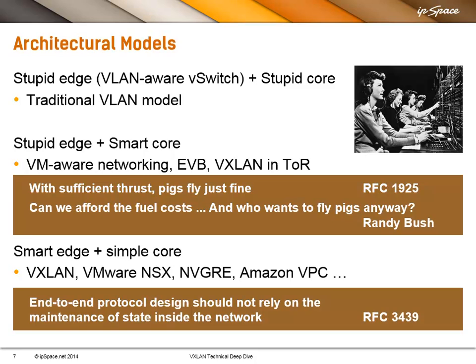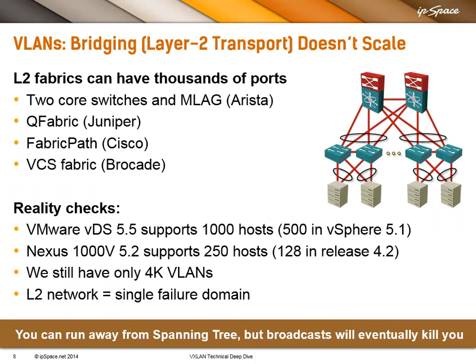A few years ago an alternative started to emerge in mainstream commercial products, because people were already using GRE tunnels to bridge between hypervisors even before that. Amazon VPC proved a few years ago that you can actually build an overlay virtual networking solution that scales to huge sizes. Not long after that, Cisco came out with the first VXLAN implementation on Nexus 1000V. Microsoft announced NVGRE a few days after that, implemented it roughly a year later, and then there was VMware NSX, and so on.